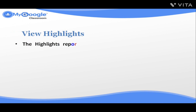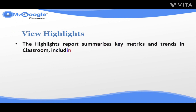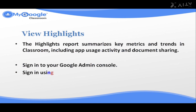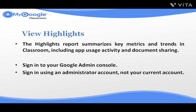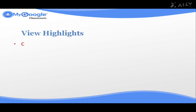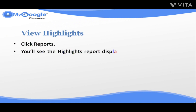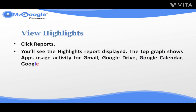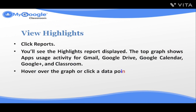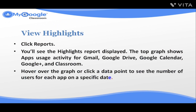View Highlights. The highlights report summarizes key metrics and trends in Classroom, including app usage activity and documented sharing. Sign in to your Google Admin Console using an administrator account, not your current account. Click Reports — you'll see the highlights report displayed. The top graph shows app usage activity for Gmail, Google Drive, Google Calendar, Google Plus, and Classroom. Hover over the graph or click a data point to see the number of users for each app on a specific date.